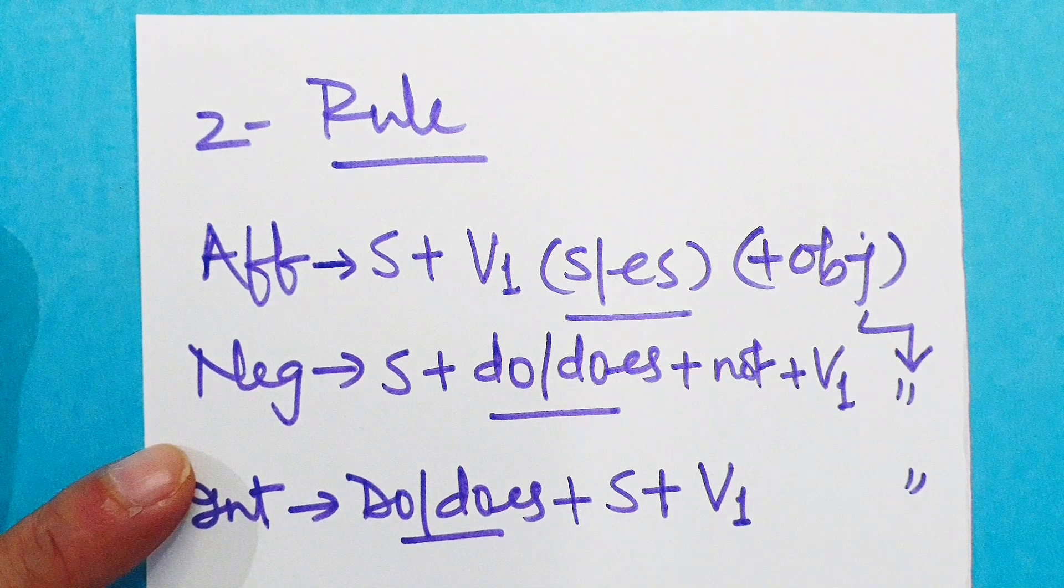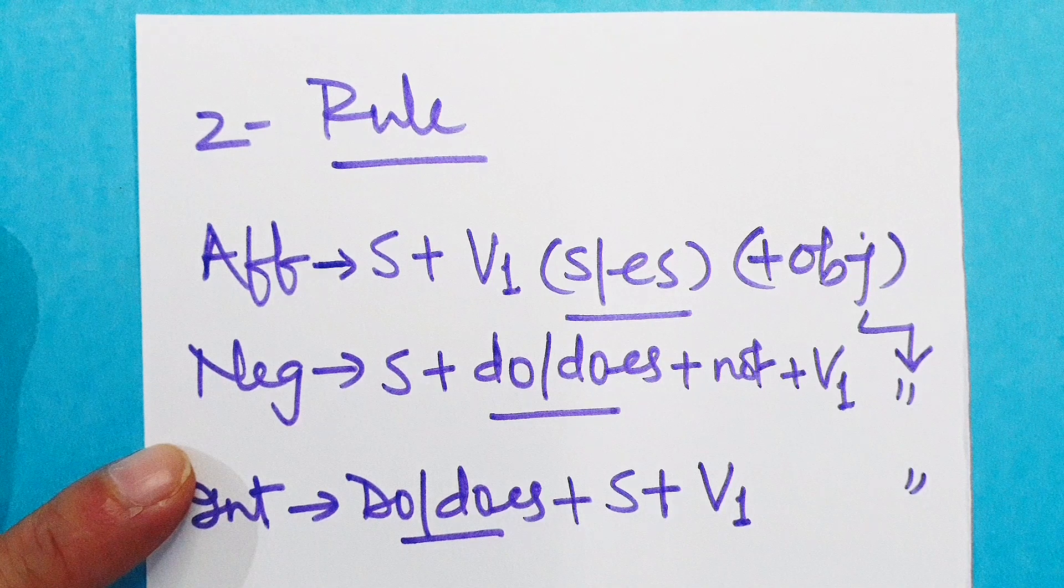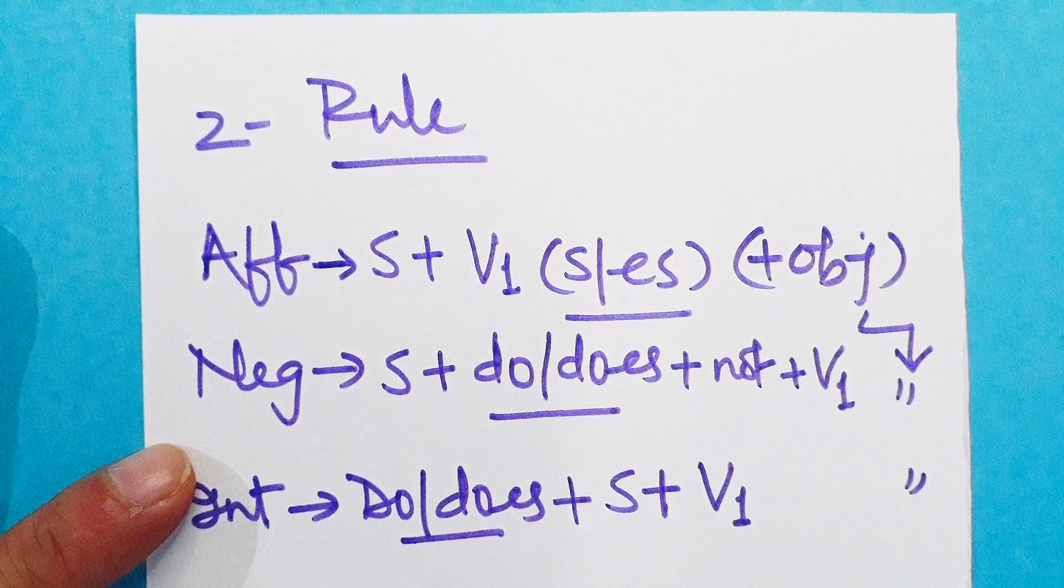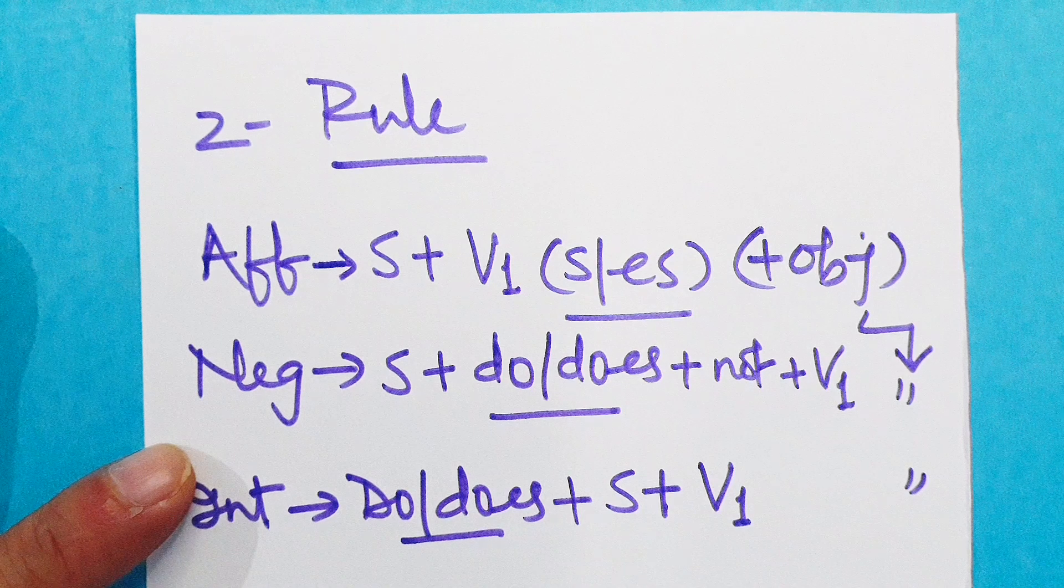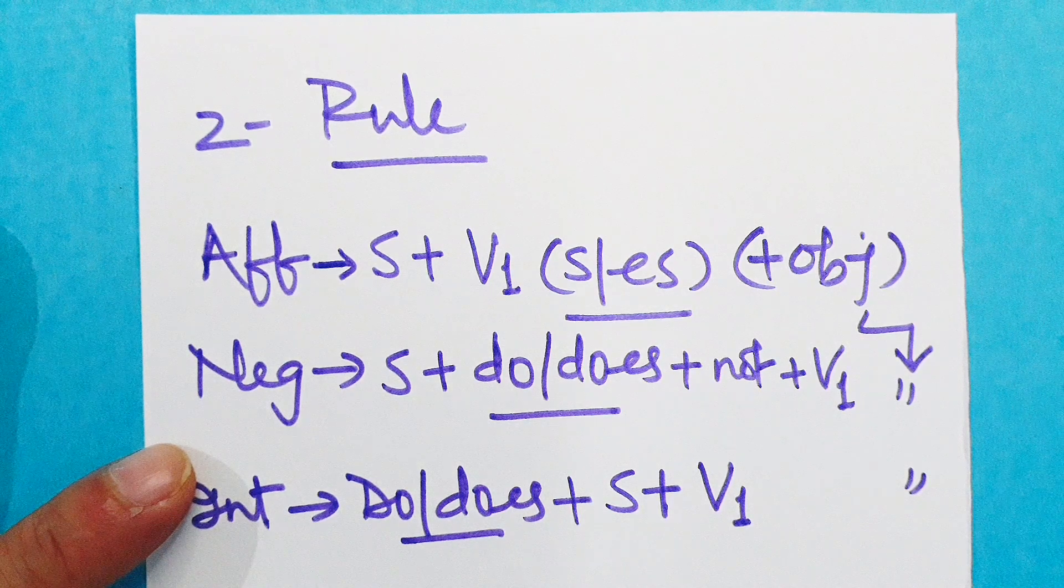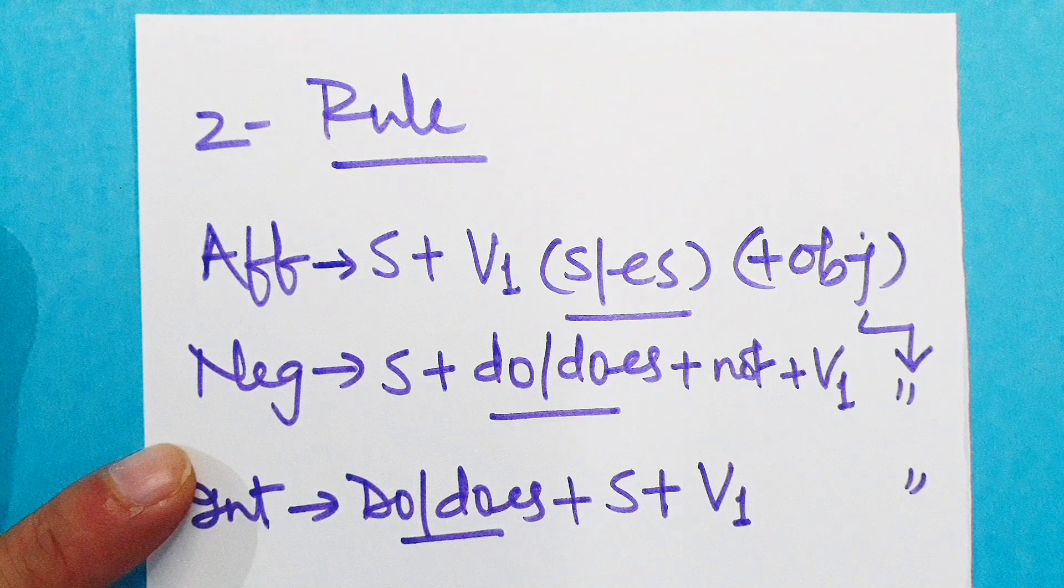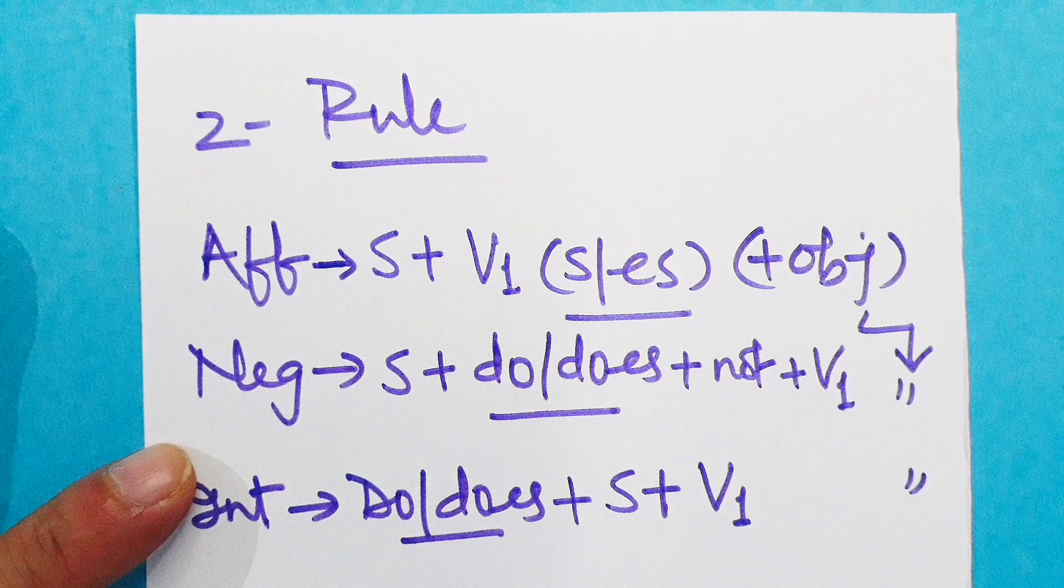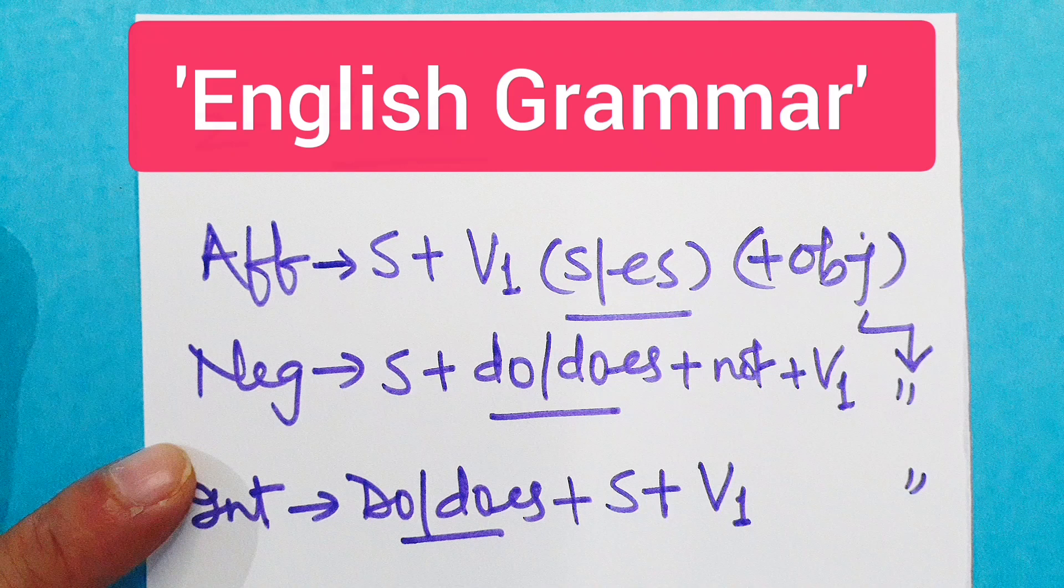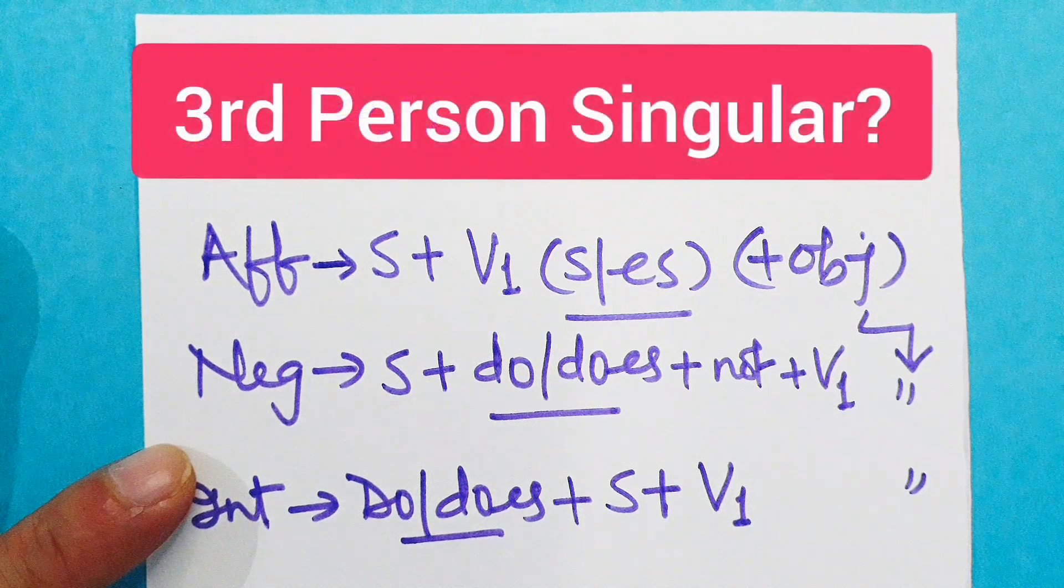It's relevant here to recall that there are three persons in English: first person, second person, and third person. First person speaking, second person listening, and third person spoken about. All three persons have two aspects each: singular as well as plural. For revision purposes, you can refer to my videos titled first person, second person, and third person that you can find in the playlist English Grammar on the channel.